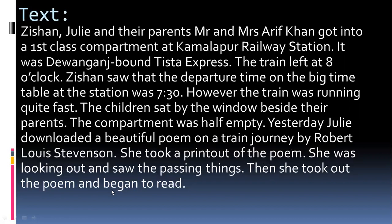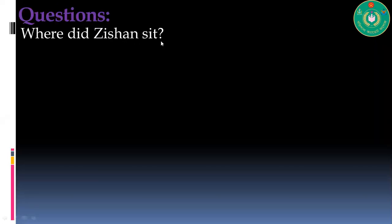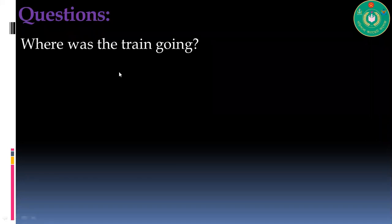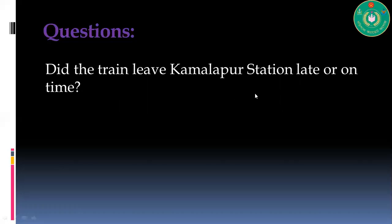Then she took out the poem and began to read. Now, the first question: are all the seats in the compartment taken? Definitely not — the compartment was half empty, so not all seats were taken. Next question: where did the children sit? They sat by the window beside their parents. Where is the train going? To Dhaka. Did the train leave Kamalapur station late or on time? The train was late by 30 minutes.